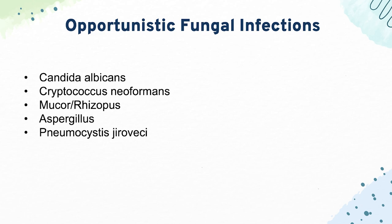Finally, we have Pneumocystis jirovecii, which causes a diffuse interstitial pneumonia with ground-glass opacities on chest X-ray. Know that you prophylax against it in HIV patients who have a CD4 count under 200.